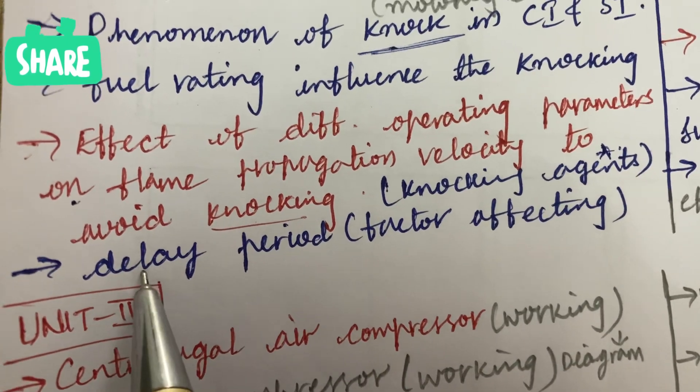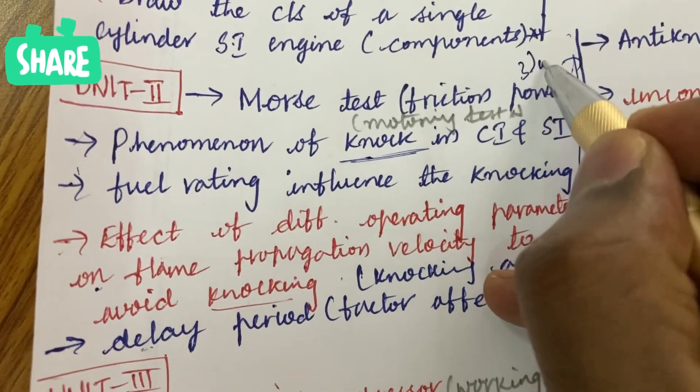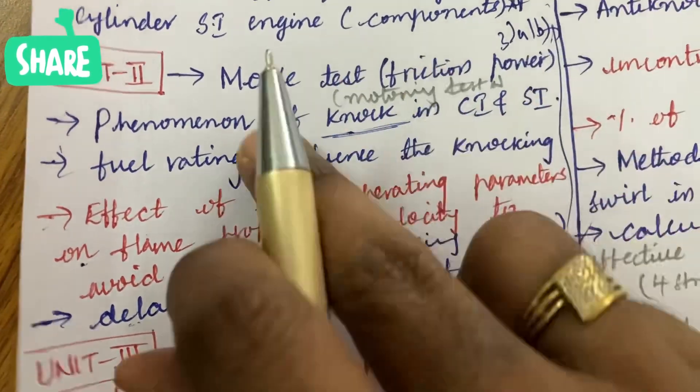Air strength for a 15 mark and define the delay period and the factors affecting the delay period. And from this part, you are going to get the question of 3A as well as 3B.